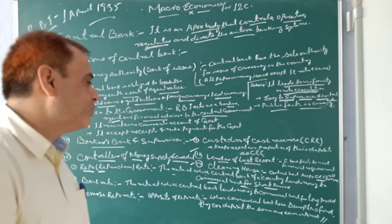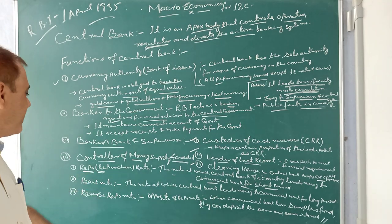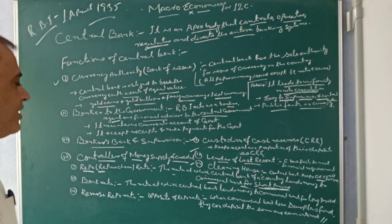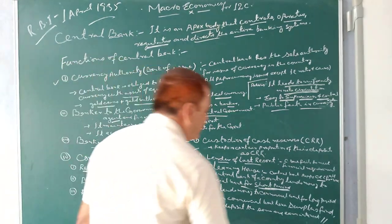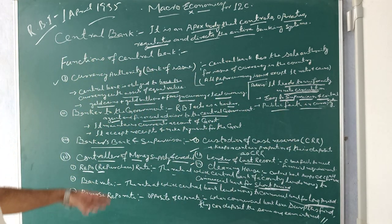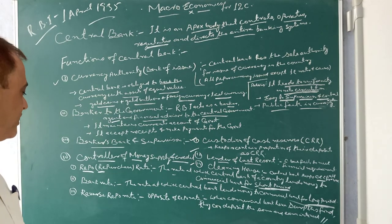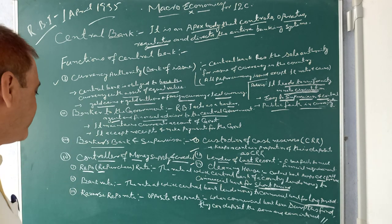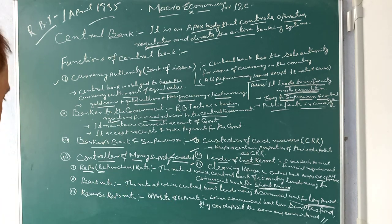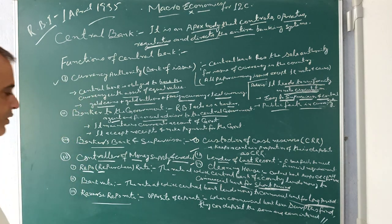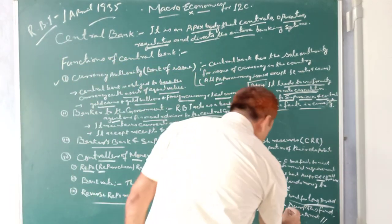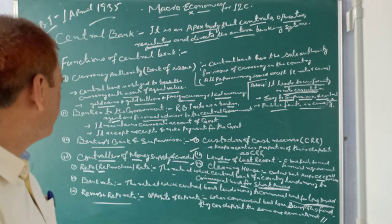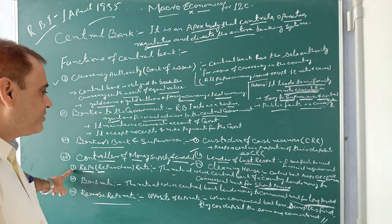Another tool is the Bank Rate, which is the rate at which the central bank lends money to commercial banks for a long period of time — one year, two years, five years, or ten years. The difference from the repo rate is only the duration: repo rate is short-term, bank rate is long-term. When the bank rate is high, commercial banks borrow less, their lending rate rises, and credit is controlled. The third tool is the Reverse Repo Rate — the opposite of the repo rate. When commercial banks have surplus funds, they deposit that amount in the central bank and earn interest on it.